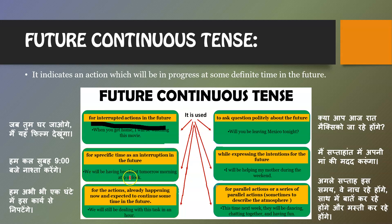For example, 'We will be having breakfast tomorrow morning at 9 o'clock' — a specific time is given. Future continuous tense is also used for actions already happening now and expected to continue some time in the future. For example, 'We will still be dealing with this task in an hour' — it means the task will take one more hour to complete.